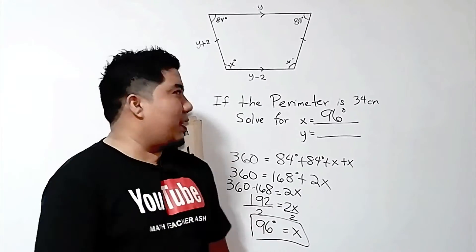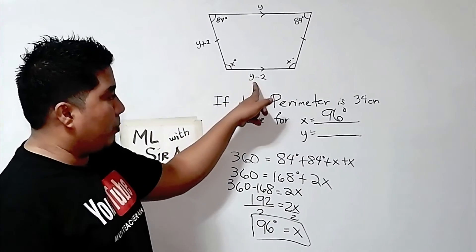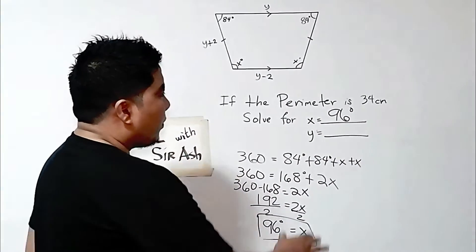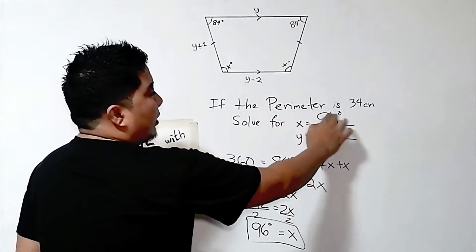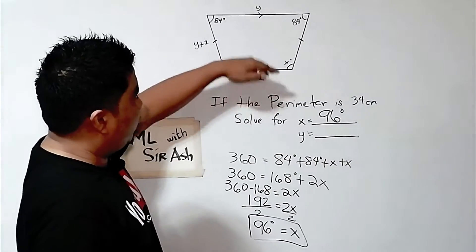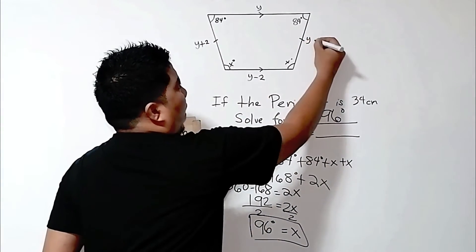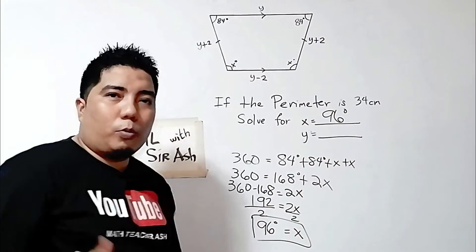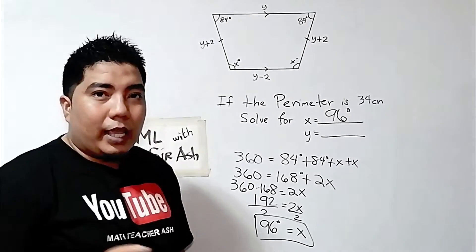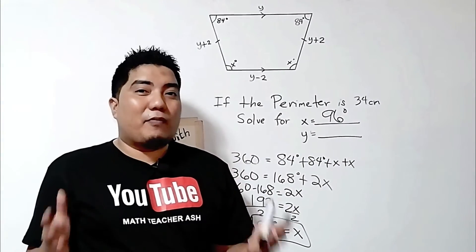Now let us go to our next variable, y. y here is basically a part of the sides. Given here is the perimeter, which is the sum of all sides. Now, if this is y minus 2, this is y, this is y plus 2, and of course this other side is also y plus 2. So in order for you to get the value of y, you will just add all the expressions and equate it to 34 centimeters.